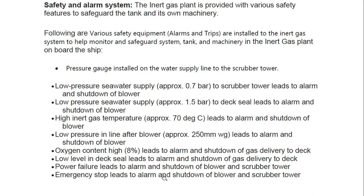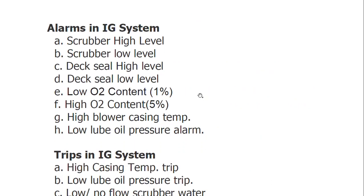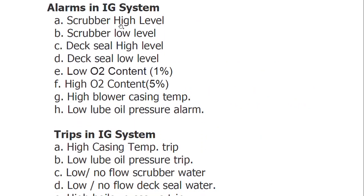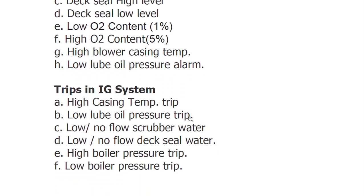Emergency stop leads to alarm and shutdown of blower and scrubber tower. In summary, the alarms include: scrubber high level, scrubber low level, deck seal high level, deck seal low level, low O2 content at 1%, high O2 content at 5%, high blower casing temperature, and low-low boiler pressure alarm. Trips and shutdowns include: high casing temperature trip, low-low boiler pressure trip, low/no flow scrubber water, low/no flow deck seal water, high boiler pressure trip, and low boiler pressure trip.